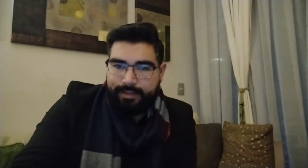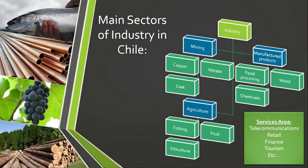Let's look at the situation Chile is facing. In terms of industry, there are three main sectors, plus a services area which is very important for the economy. In the mining sector, Chile extracts copper, nitrate, and coal. Manufactured products include food, wood, and chemicals. Agriculture produces fish, fruit, and wine.